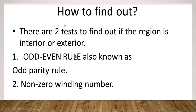To find out which is the interior region and which is the exterior region of a polygon, there are two tests. The first test is called the odd-even rule, also known as the odd parity rule. The second rule is the non-zero winding number rule. Let us see what these different rules are in order to identify the interior and exterior regions of a polygon.